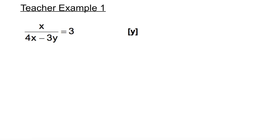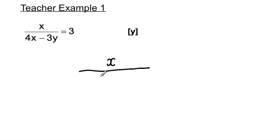Example 1. We have x over 4x minus 3y equals 3, and we need to make y the subject. So the first thing I'm going to do is write out the question over here: x over 4x minus 3y is equal to 3.